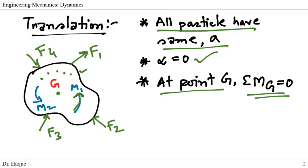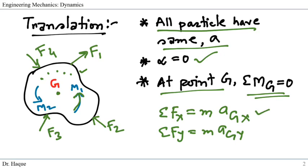So these are the conditions, and for these conditions our general plane equation of motion simplifies to Fx equals m*agx and Fy equals m*agy in y direction, and sum of moment about point G is zero.